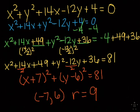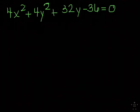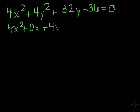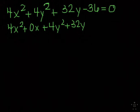Last one. We have 4x² + 4y² + 32y - 36 = 0. If you look at this one, we're missing just a regular x variable. It's okay though. We can just make it a 0 if you need that placeholder. So we can just say this is 4x² + 0x + 4y² + 32y - 36 = 0.